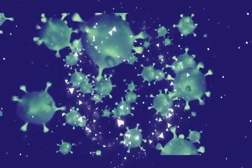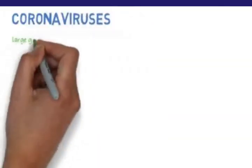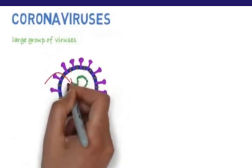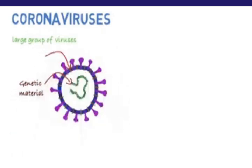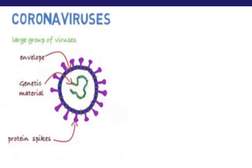Coronaviruses are a large group of viruses. They consist of a core of genetic material surrounded by an envelope with protein spikes. This gives it the appearance of a crown. Crown in Latin is called corona, and that's how these viruses get their name.